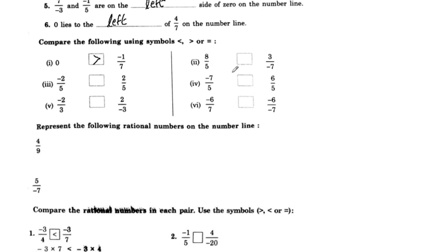For 1 by 5 and 3 by negative 7: one positive and one negative - the positive is always greater.